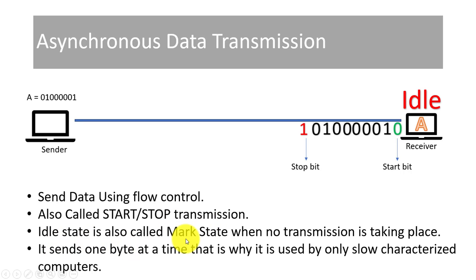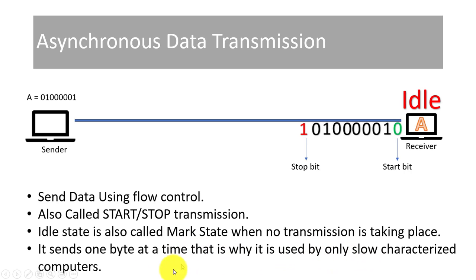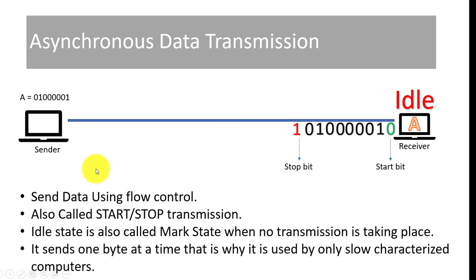Idle state is also called mark state. This is idle state — when no transmission is taking place, we call it mark state. It sends one byte at a time, that is why it is used by only slow-speed computers. Our asynchronous data transmission transmits one byte at a time, which makes it slower. These computers that use asynchronous transmission are the ones that are slower.